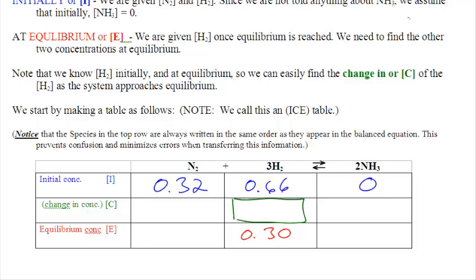So we are given information that allows us to find the change. We know that if the H2 started at 66 and went down to 30, it must have decreased by 0.36. We know that everything has to change according to the ratios. That's what we graphed in class a few days ago. This ratio is a 1 to a 3 to a 2. So if H2 decreased by 0.36, N2, the reactant, also has to decrease, but it has to decrease by the ratio of 1 to 3. So this is going to go down by 0.12.